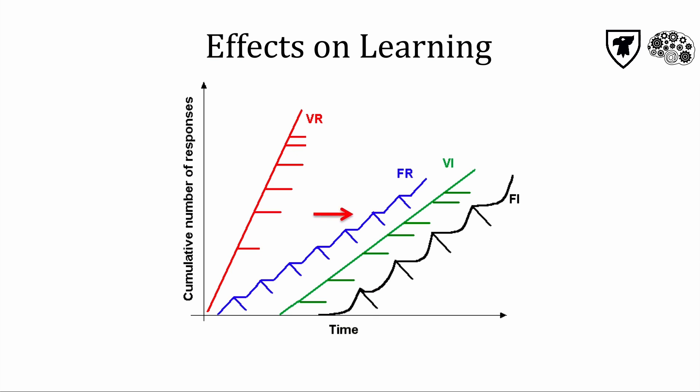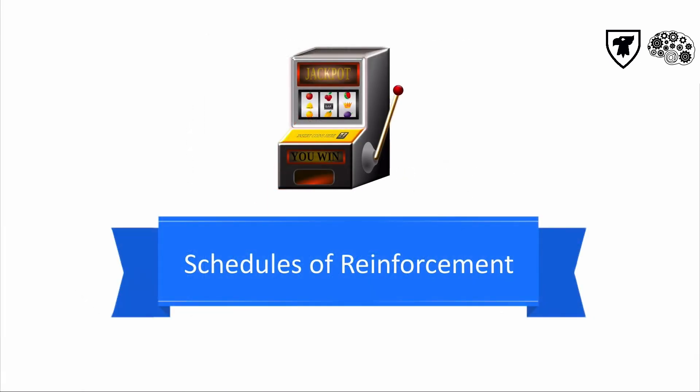Also note that fixed schedules, both ratio and interval, produce a dip in responding immediately after reinforcement, which is referred to as a scalloped pattern. Fixed intermittent schedules are predictable, so the individual knows that the next response is not going to be followed right away by a reward, and responding takes a little break.